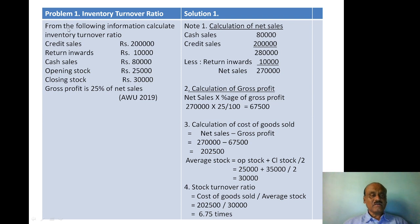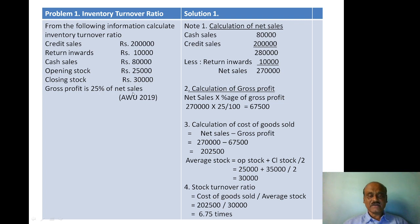The problem is: From the following information, calculate inventory turnover ratio. Credit sales rupees 2 lakh, return inwards 10,000, cash sales rupees 80,000, opening stock rupees 25,000, closing stock rupees 30,000, and gross profit is 25% of net sales. What is asked? Inventory turnover ratio.